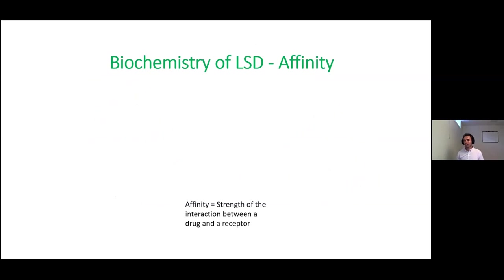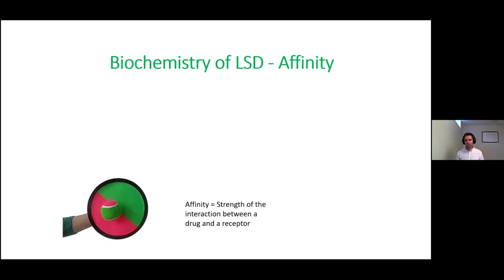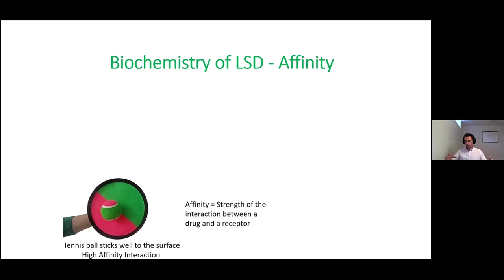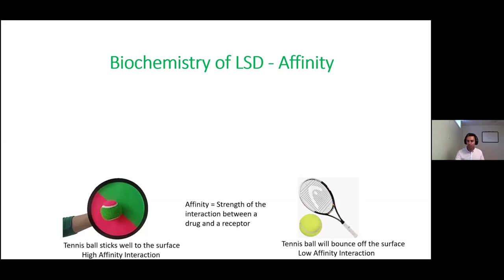There's a concept in pharmacology known as affinity - the strength of an interaction between a drug and a receptor. Think about these toys with a Velcro surface: if you take a tennis ball and throw it at the Velcro surface, it sticks really well - you'd have to grab the ball and rip it off. We call this a high affinity interaction. On the contrary, if a tennis ball hits a tennis racket, it bounces right off with no stickiness - we call this a low affinity interaction.